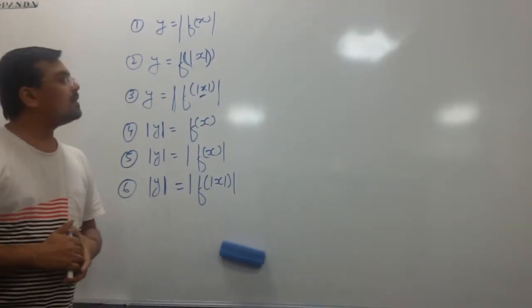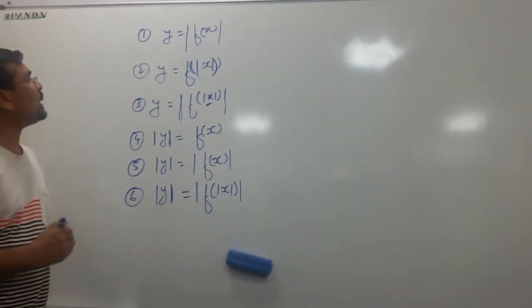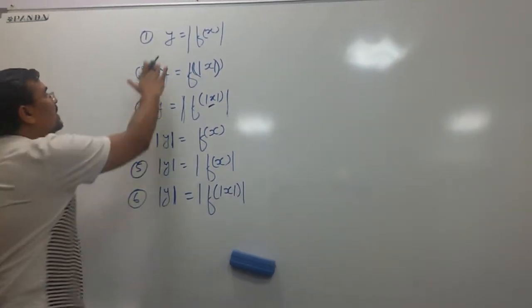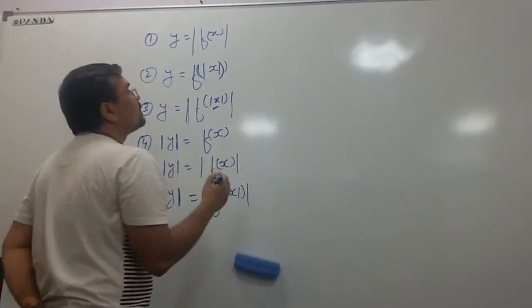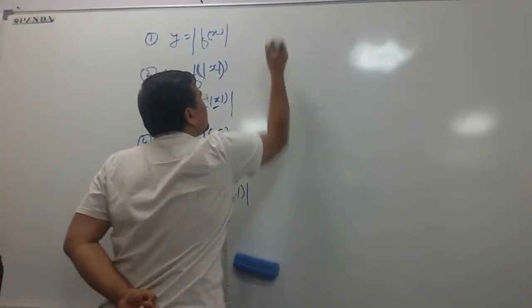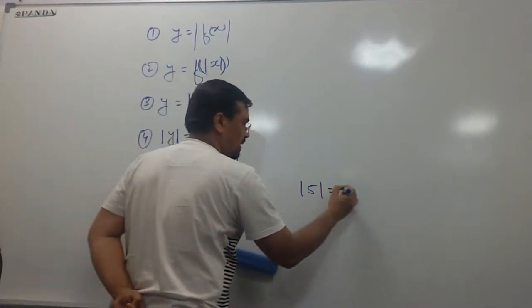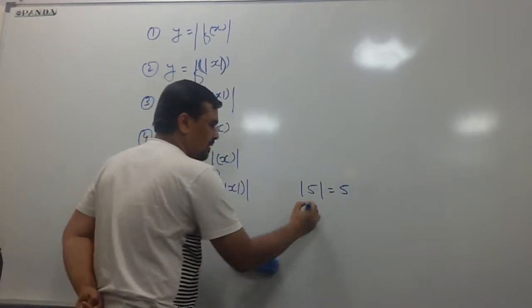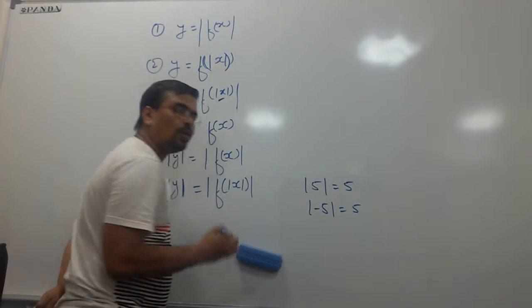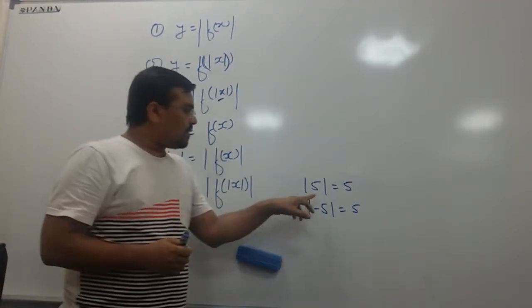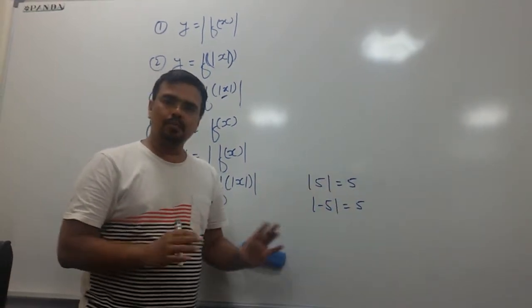In conjunction with the drafts, let's see how to draw these functions. Number 1 is y equal to absolute value of f(x). Before we start, let's understand the meaning of absolute value. Absolute value of 5 is 5, and absolute value of minus 5 is also 5. So whatever is inside the absolute value results in positive only.